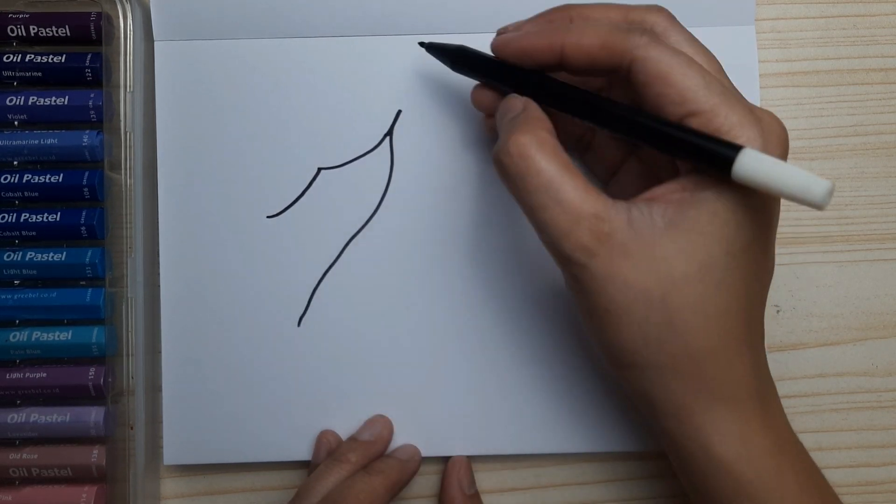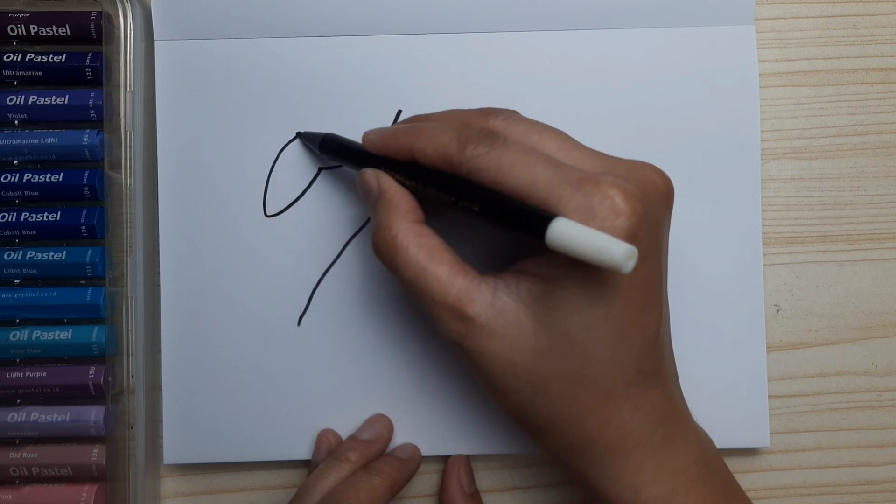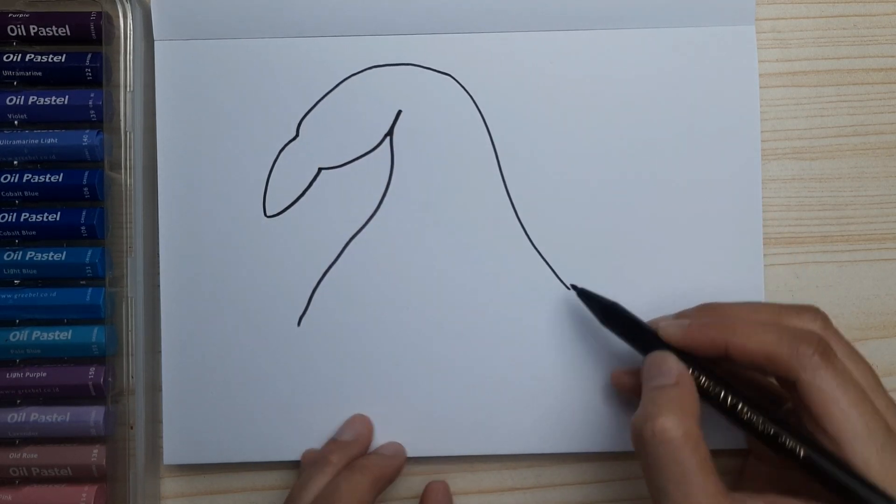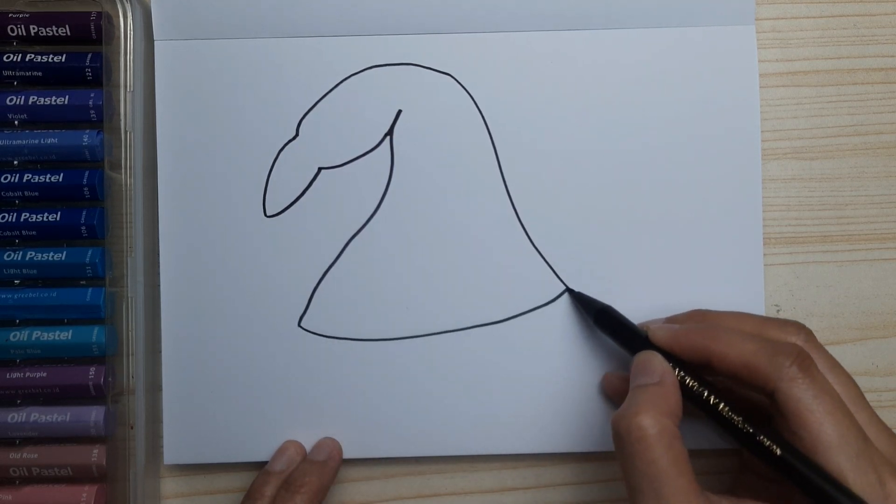...top that's banded and down, the crown or the body of the hat, and connect them. Now we start drawing...